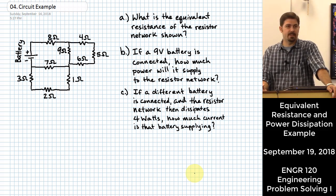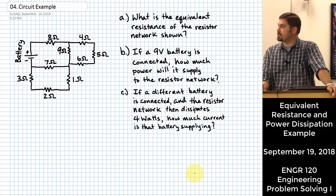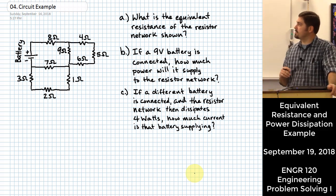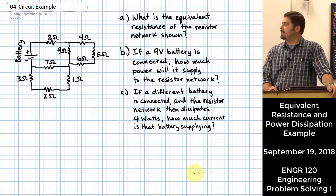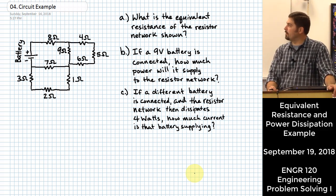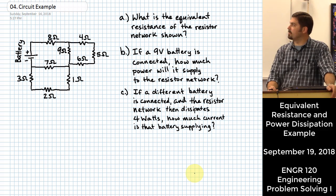Once we've got that, we'll probably need that information to deal with part B, which is if a 9-volt battery, in other words, if that battery that's connected there is 9 volts, then how much power will it end up supplying to the resistor network?